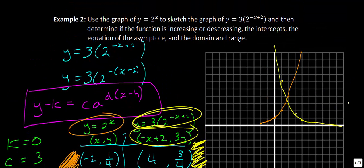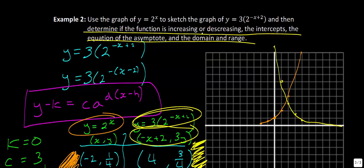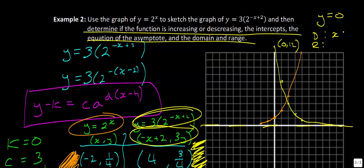Going back to what we need to answer for Example 2: the function is decreasing. The y-intercept is at the ordered pair (0, 12). There are no x-intercepts because exponential functions don't have them. The horizontal asymptote is at y equals 0. For the domain: x is a member of the reals. For the range: y is greater than 0.